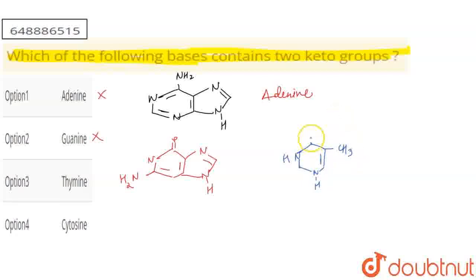Then I have a double bond here and a double bond here. And here we have two keto groups here. I'm looking for two keto groups. So this is the final answer, that is option third - thymine.